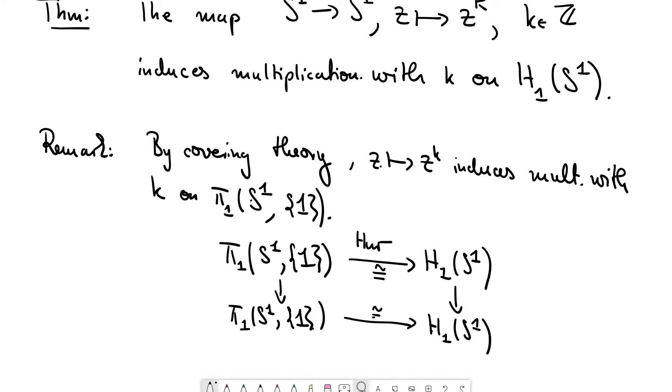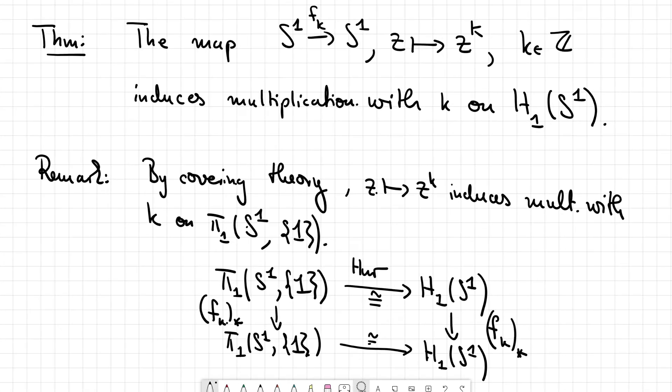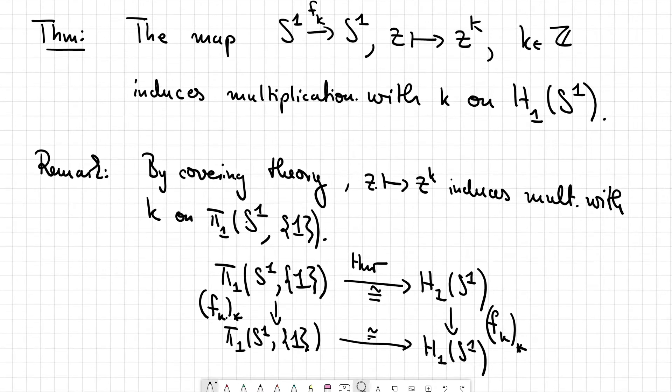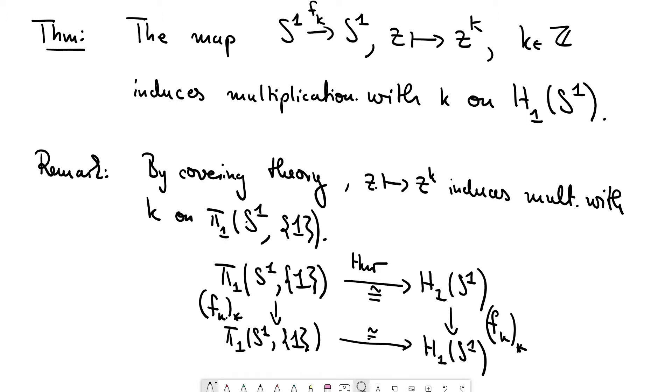So maybe it's good to have a name for this map. Let's call it f_k. And here we have f_k induced and the same here. So strictly speaking, this would give you the statement for singular homology, right? Because the Hurewicz isomorphism theorem is for singular homology. That's a statement just for singular homology if we use this, but it's in general true. You want to prove it now from the axioms.